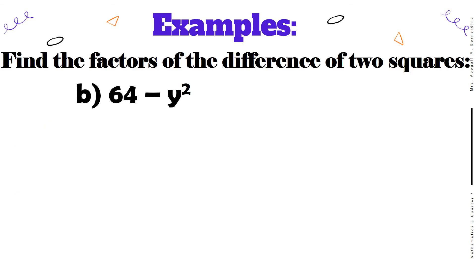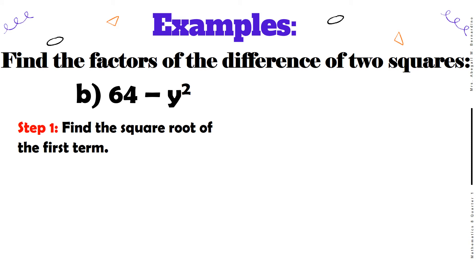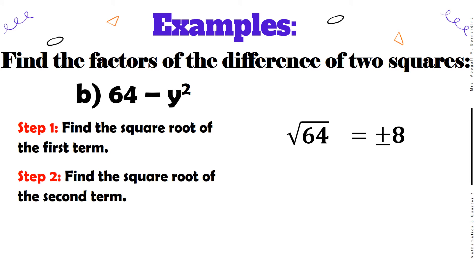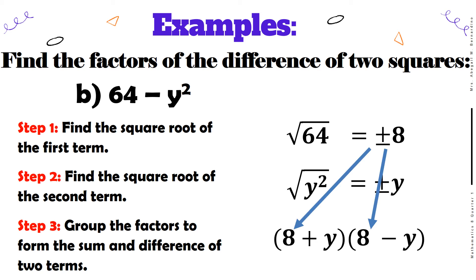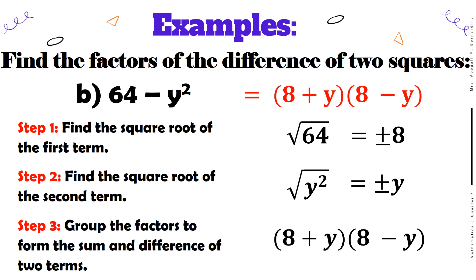For letter B, we have 64 minus y squared. Step 1: find the square root of the first term, which is 64 — the answer is positive or negative 8. Step 2: find the square root of the second term, which is y squared — the answer is positive or negative y. For step 3, group the factors: the first terms of the binomial are 8, and the second terms are positive y and negative y respectively. The answer is the quantity 8 plus y times the quantity 8 minus y.